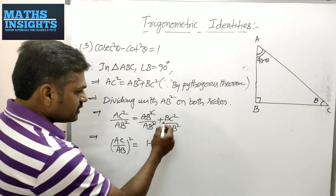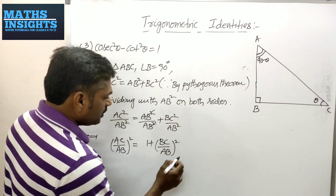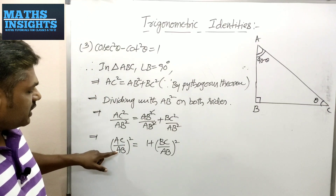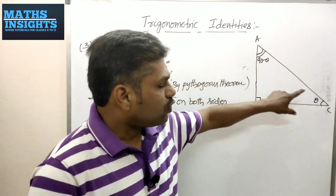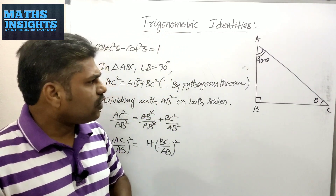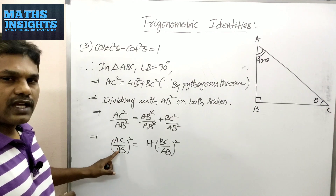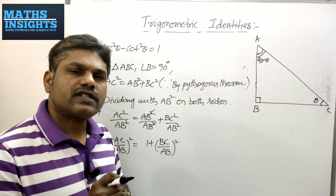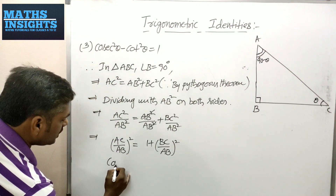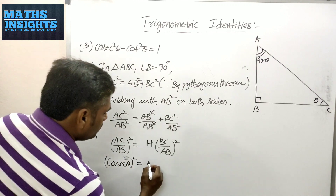We need to recollect the definitions of trigonometric ratios. Observing AC/AB: AB is the side opposite to θ and AC is the hypotenuse. The trigonometric ratio sin θ = opposite/hypotenuse, so AC/AB is the reciprocal of sin θ. The reciprocal of sin θ is cosec θ. Therefore (AC/AB)² = cosec²θ.